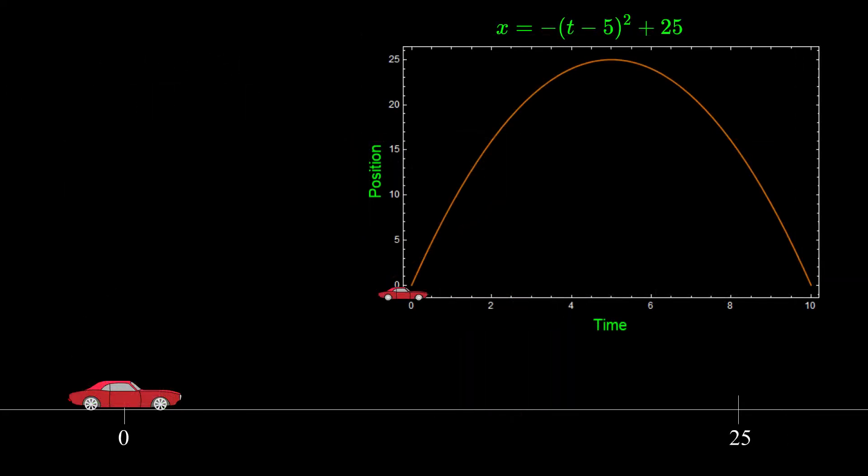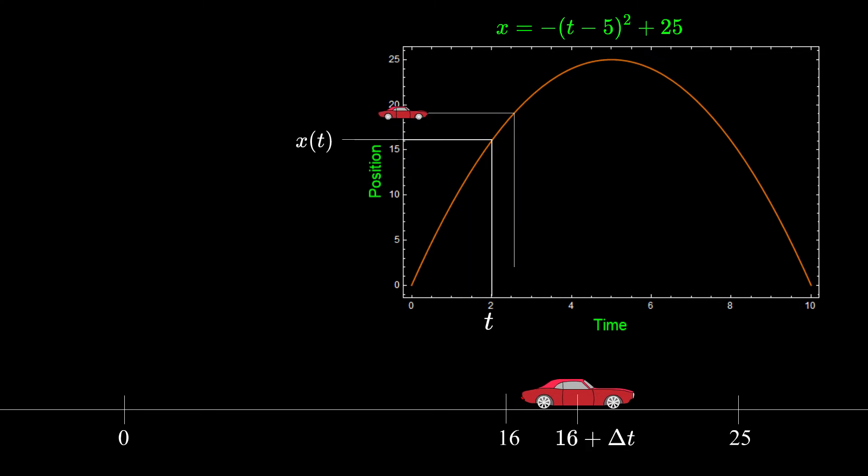Now let's go back to this scenario where car's position is this specific function of time. If we want to know the exact velocity at time t, we have to create small interval at this point. Now we can calculate the average velocity on this small interval.